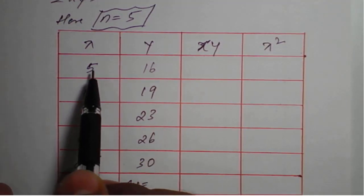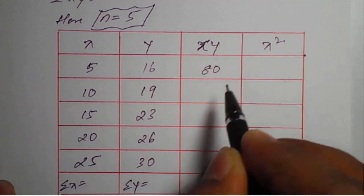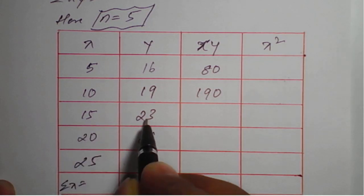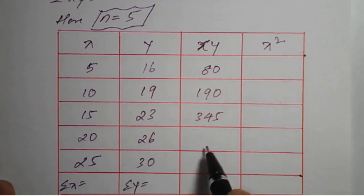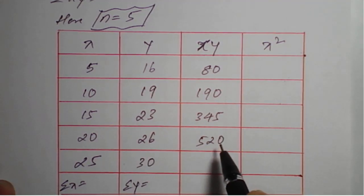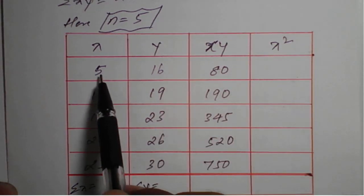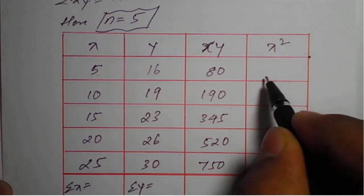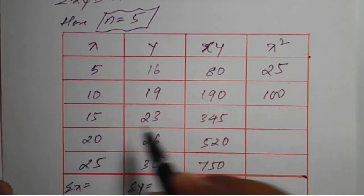For summation xy: 5 into 16 is 80; 10 into 19 is 190; 15 into 23 is 345; 20 into 26 is 520; and 25 into 30 is 750. Similarly for x square values: 5 square is 25, 10 square is 100, 15 square is 225.